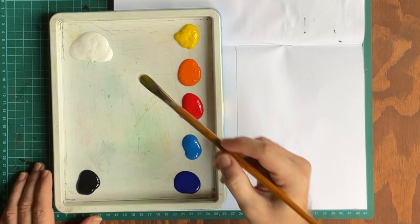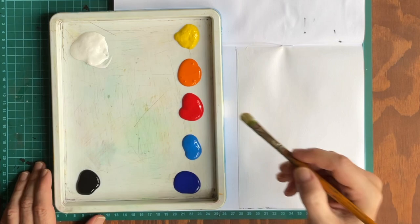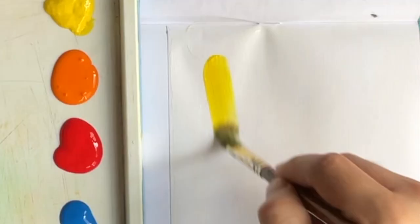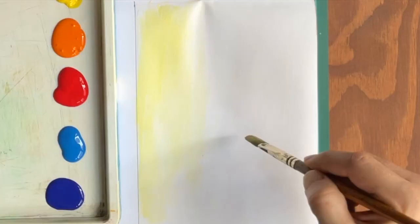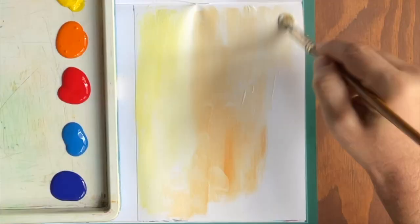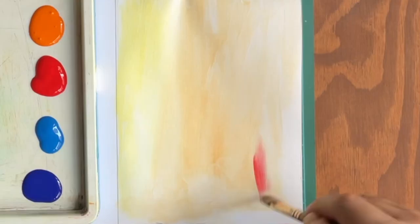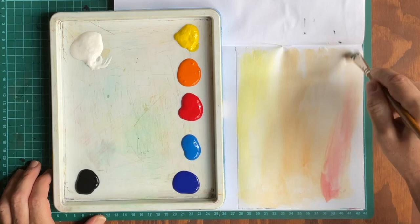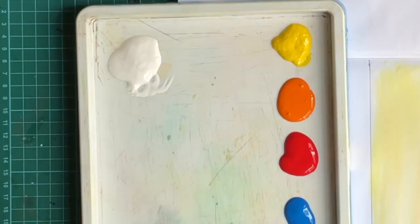The first thing we'll do is use our filbert brush and take some white and cover the entire paper. We need to do this to create a barrier, so when we apply masking tape, it doesn't tear the paper. I'm also going to mix a small amount of yellow into the background, as well as some orange. Apply some white paint over it to dull it down if needed. I'll also take a very small amount of red, and apply it to the bottom right corner area. Blow it dry when complete.